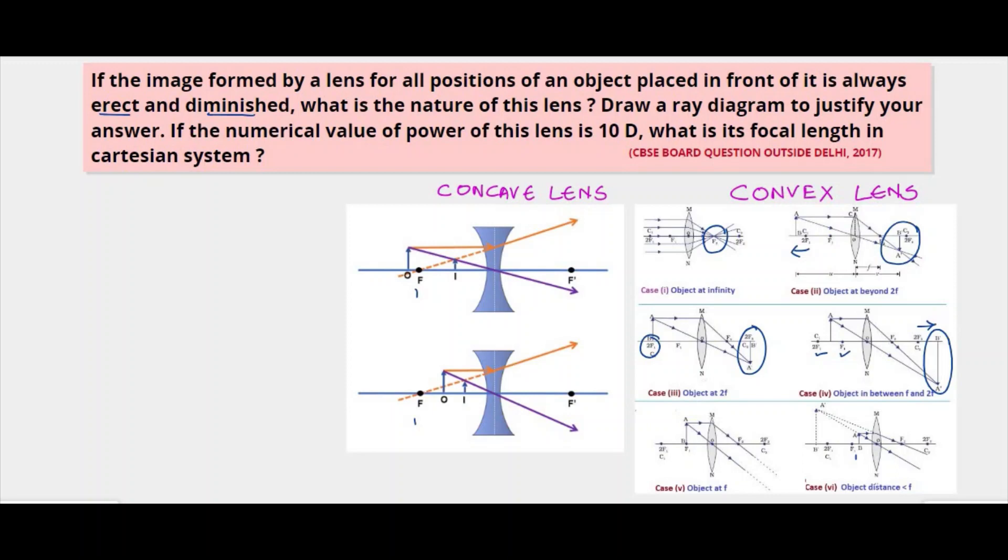So here we see that the image size is changing and also it's not erect always, so this is ruled out. It could not be a convex lens. Now let's have a look at the concave lens. When the object was placed to the left of the focus, the image formed was between focus and optical center.